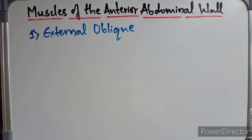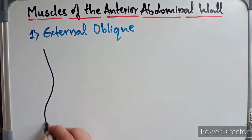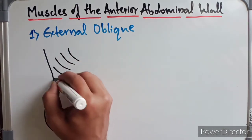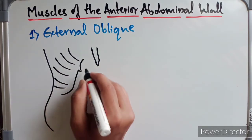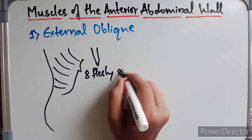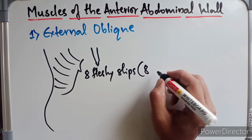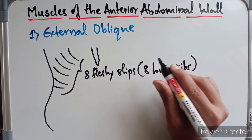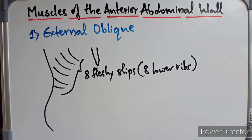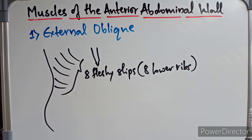The external oblique originates from eight fleshy slips from the outer surface of the lower eight costal ribs. These eight fleshy slips attach from the lower eight costal ribs. It is inserted into three main areas: the first is the posterior most fibers, which pass vertically downward to be inserted on the outer lip of the anterior two-thirds of the iliac crest.